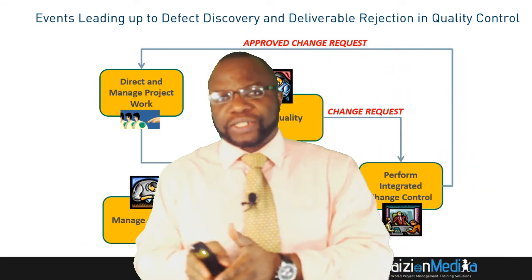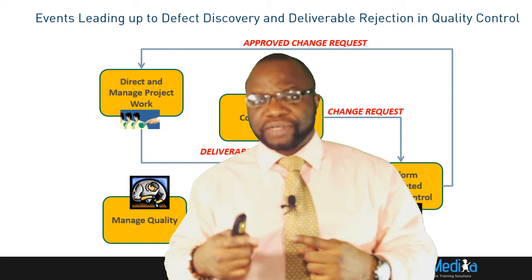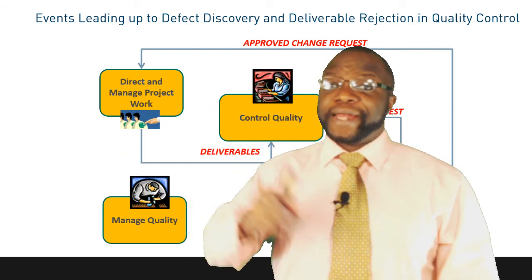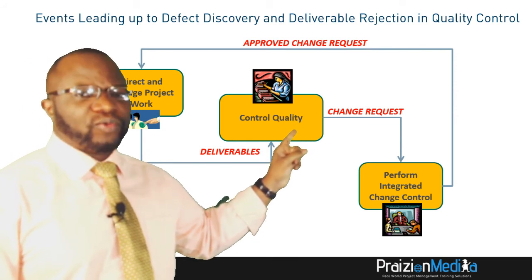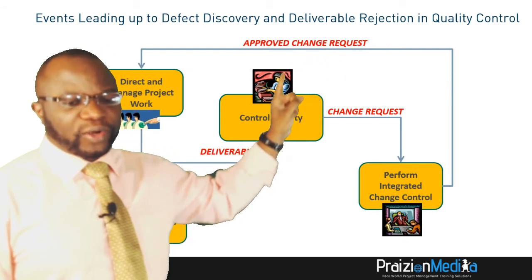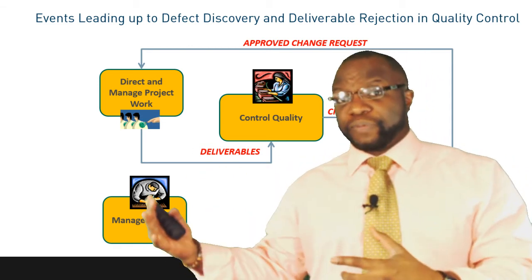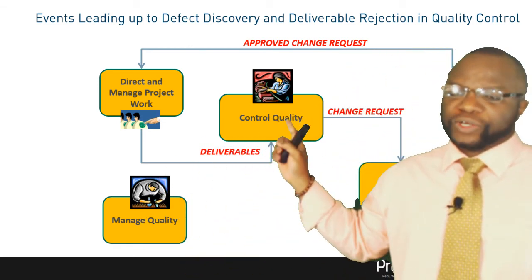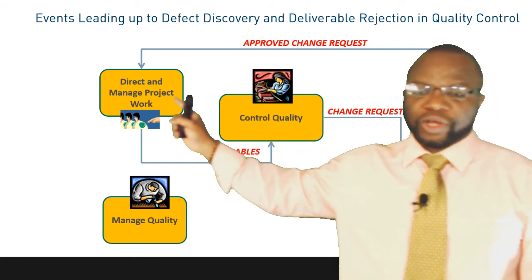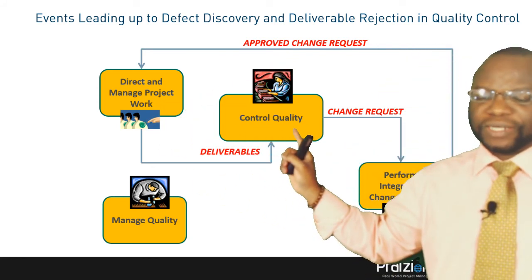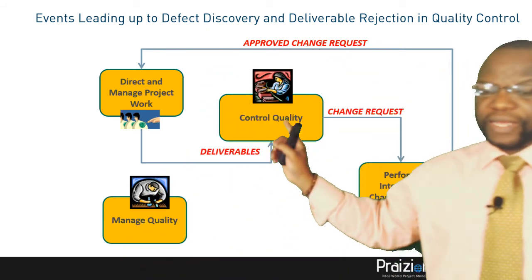You cannot just look at Plan Quality Management, Manage Quality, and Control Quality in isolation — that's not how it happens. There's a lot of interconnectivity between these processes. Don't forget that this approved change request is also going to be an input to Control Quality. We see this approved change request going into Control Quality because on the second go-round, we are going to inspect the approved change request — making sure that what was approved is not only done but is also checked — and hopefully we will not get another change request from the lady on the conveyor belt.